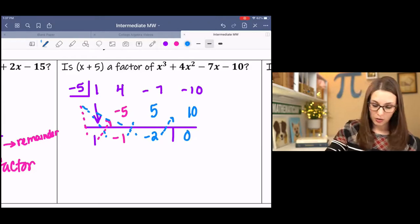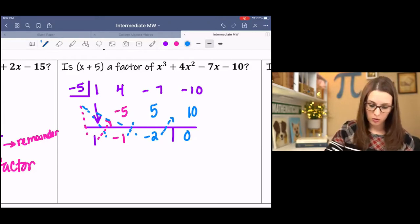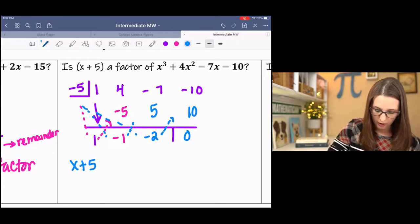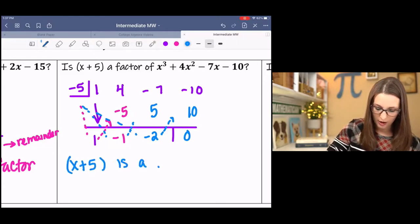Remainder is 0. Yay. So since the remainder is 0, that indicates that x plus 5 is a factor.